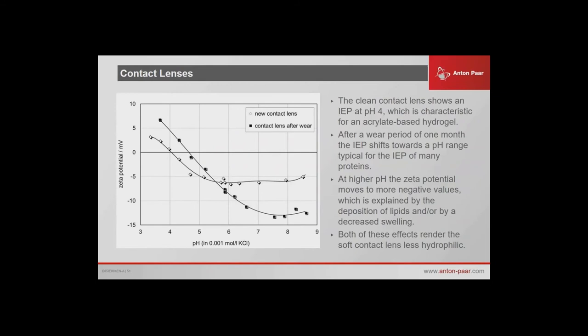Contact lenses — it's almost the same graph. The difference is the new contact lens plateaus at one level, whereas an old contact lens after wear plateaus much lower. Why do your eyes feel dry with bad contact lenses? A good contact lens should be hydrophilic — it should like to be in water. When it starts being dry, it's because it's actually repelling water. That's why you get a bit of abrasion between your lens and your eye. The Zeta potential data shows that the fouling effects make the contact lens less hydrophilic over time.